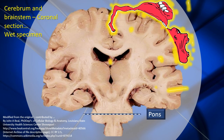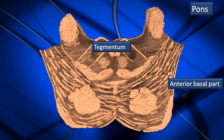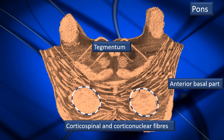Moving down to the pons, the pyramidal tract is always at the front — close to the ventral surface of the brain stem — all through the midbrain, pons, and medulla oblongata. That is easy to remember. In a cross-section of the pons, there is a posterior tegmentum and an anterior basal part. In the anterior basal part, you can see clusters of nuclei, and within them the combined corticospinal and corticonuclear fibers.